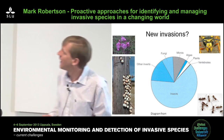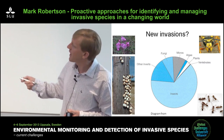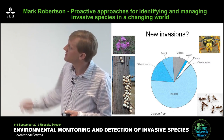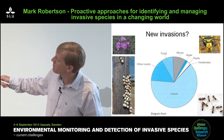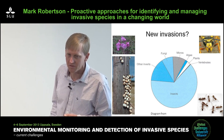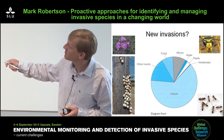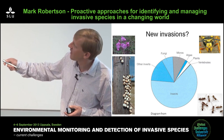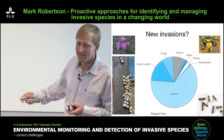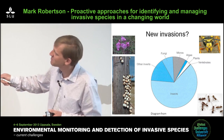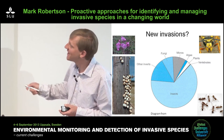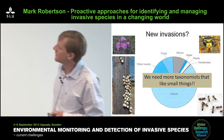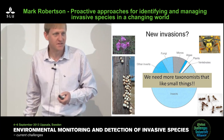In terms of new invasions, looking at a pie chart of all described species — plants, vertebrates, microbes, fungi, invertebrates — microbes and fungi are probably massively underestimated, and there are billions of insects. We need taxonomists who like small things — that's the answer there.